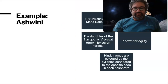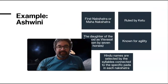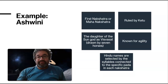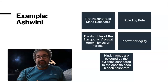An example of a lunar mansion is the first one, Ashwini. It's interesting because this is a very swift, fast, agile sort of lunar mansion. The reason is that Vivasvan, the father of Ashwini and a form of the sun god, had seven horses drawing his chariot. Ashwini was given some of the same boons as her father.